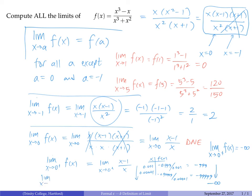The limit as x approaches 0 from the left of f(x) is equal to plus infinity. This tells us that the limit does not exist, but more specifically it tells us how the limit doesn't exist and what the function is doing near x=0. And that covers all of the limits as x approaches every possible number on the real number line.